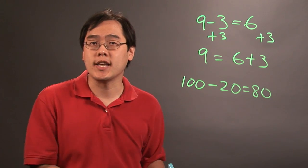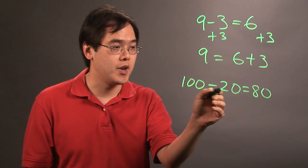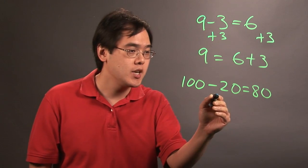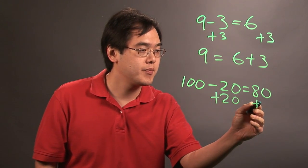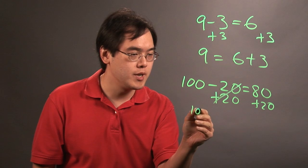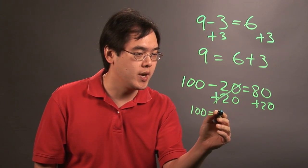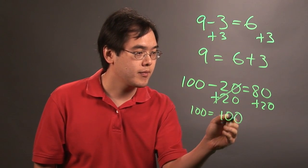Again, you can verify by adding the number that's being subtracted on both sides. So if you add 20 to both sides, you have 100 equals 80 plus 20. That's going to give you 100.